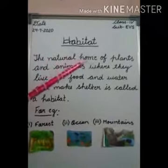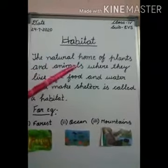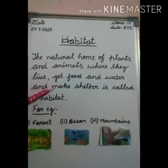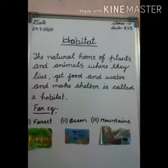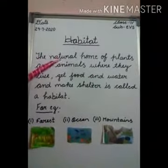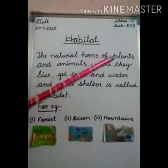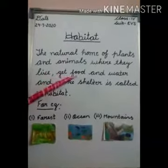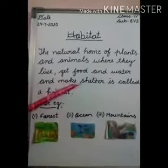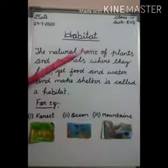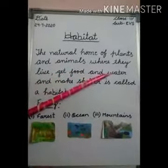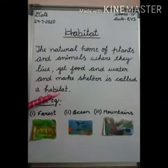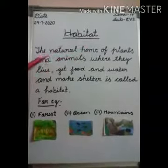The natural home of plants and animals where they live, get food and water, and make shelter is called a habitat. Natural means made by God. We need food and water to live, and animals also need food and water to live, and they make their shelter. So this is called a habitat.